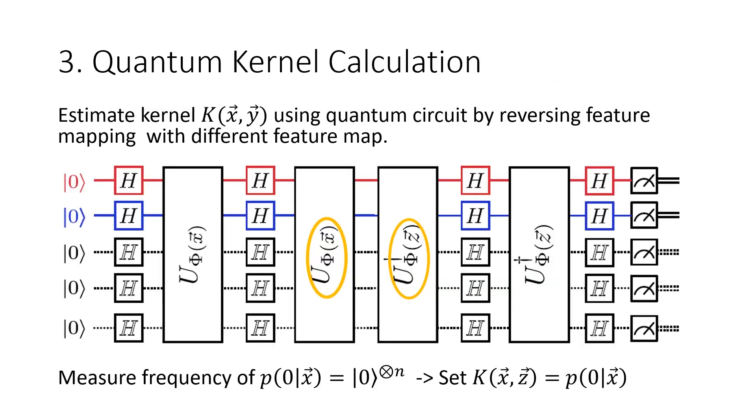Next, the kernel is calculated by choosing one point for x and iterating through all the points as z in this circuit. Intuitively, it encodes the data using U_x and then attempts to reverse the operation by applying U_z dagger. Note that if x equals z, then U_x equals U_z, and the result of the circuit is the all-zero state.